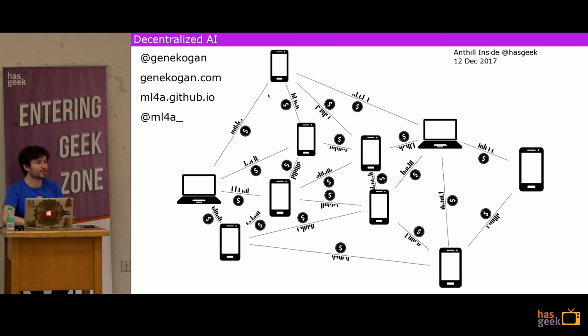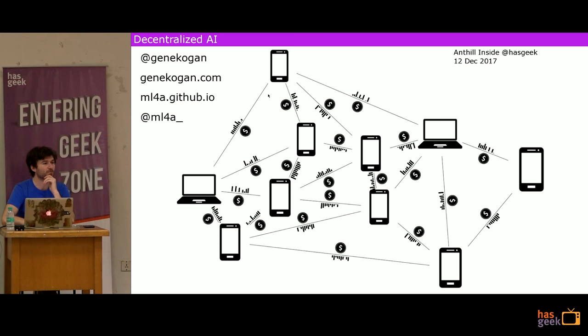Most of what I do is connected to machine learning for artists — applications of machine learning for art. I'm not going to talk about that very much today, though it's tangentially connected. What this talk is mostly about is the notion of decentralized artificial intelligence, or decentralized AI, which is something I've been thinking and writing about a lot recently.